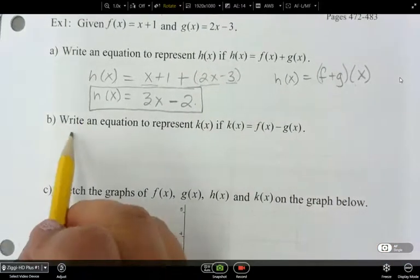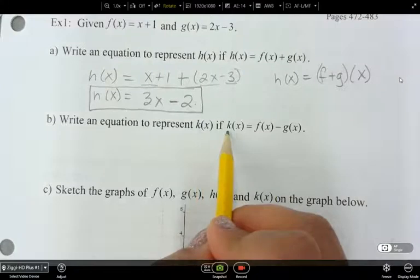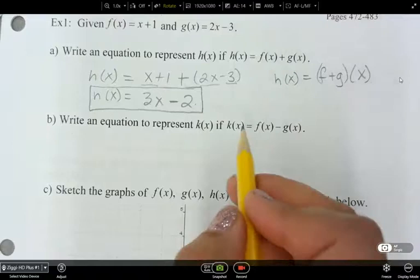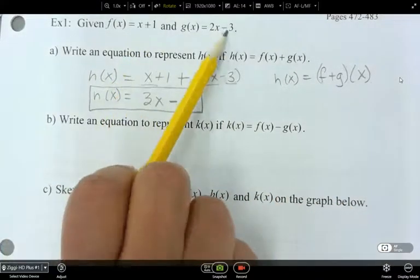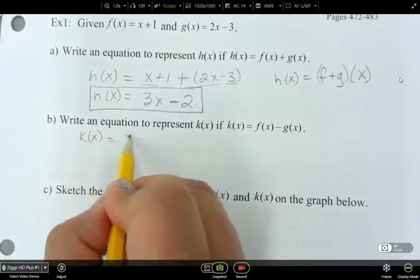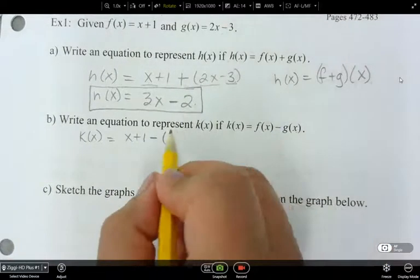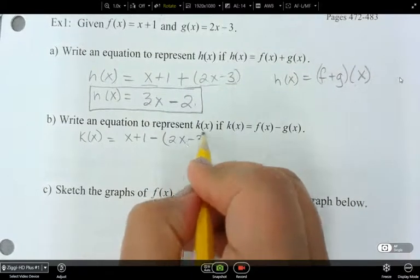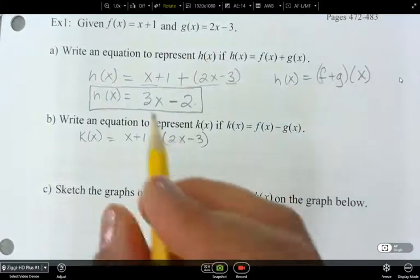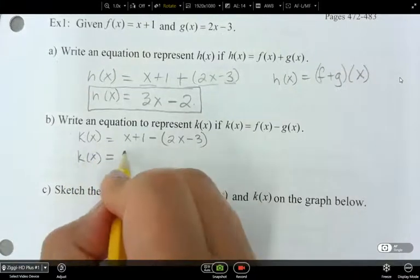Now, here we can write an equation to represent k of x, if k of x is f of x minus g of x. So that would simply be taking these two and subtracting them. Just mind the negative sign, and also note that you'll have to have a bracket for the g of x around it, so that that negative actually runs through that g of x function.